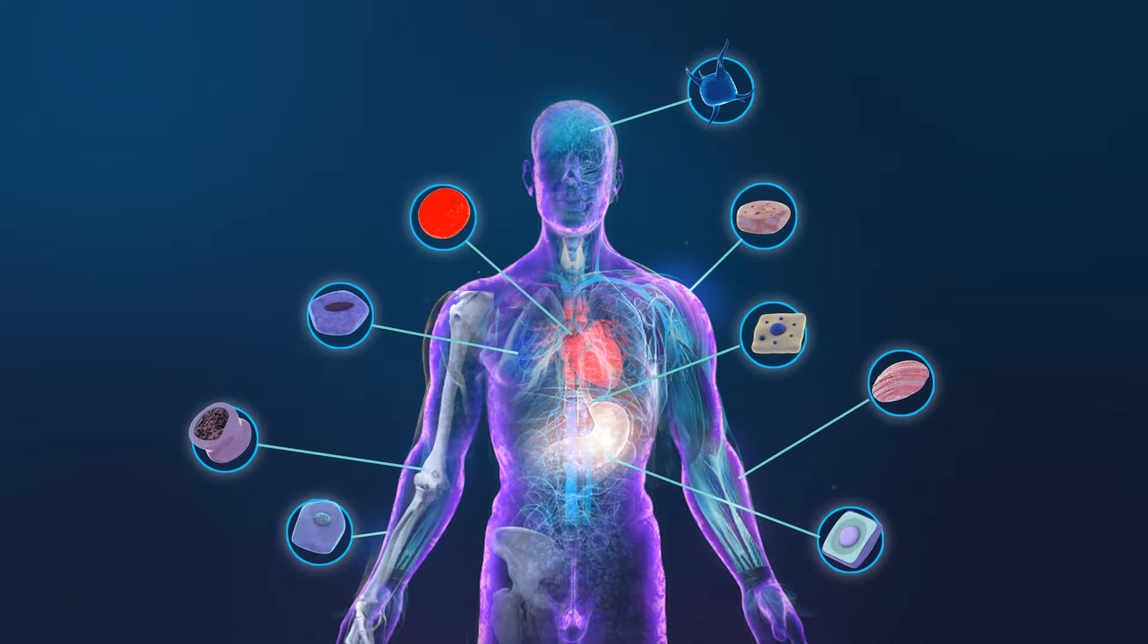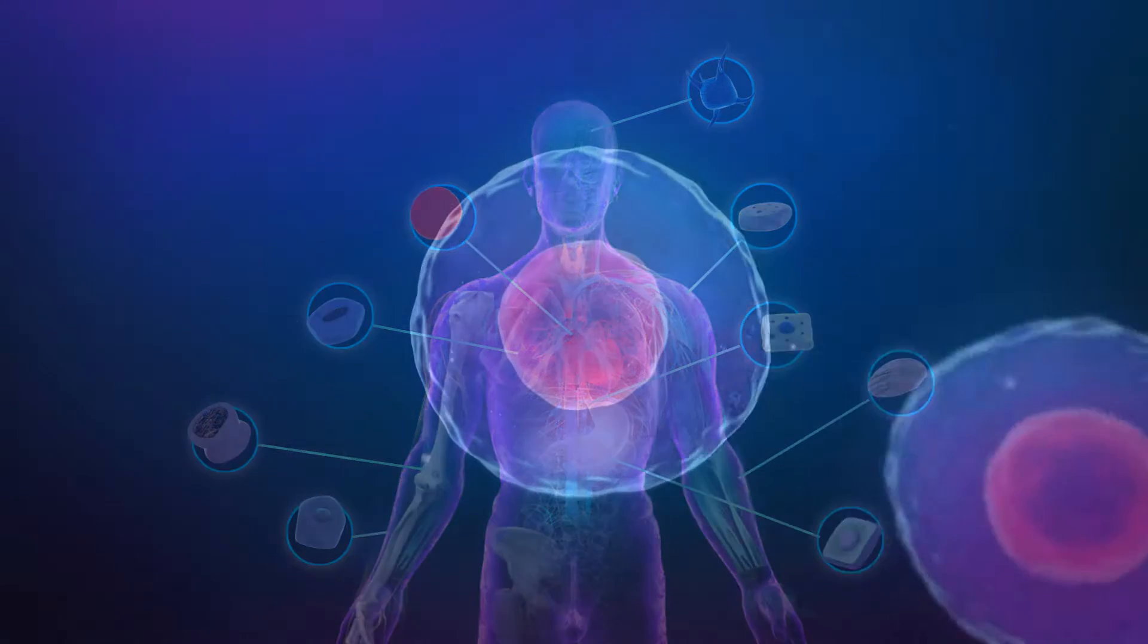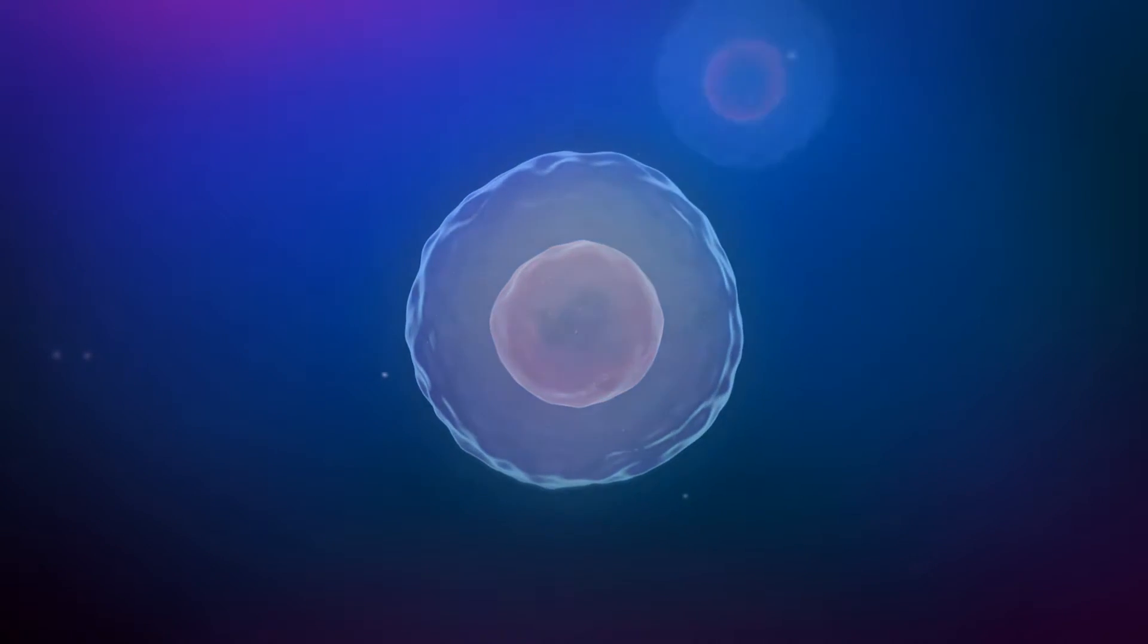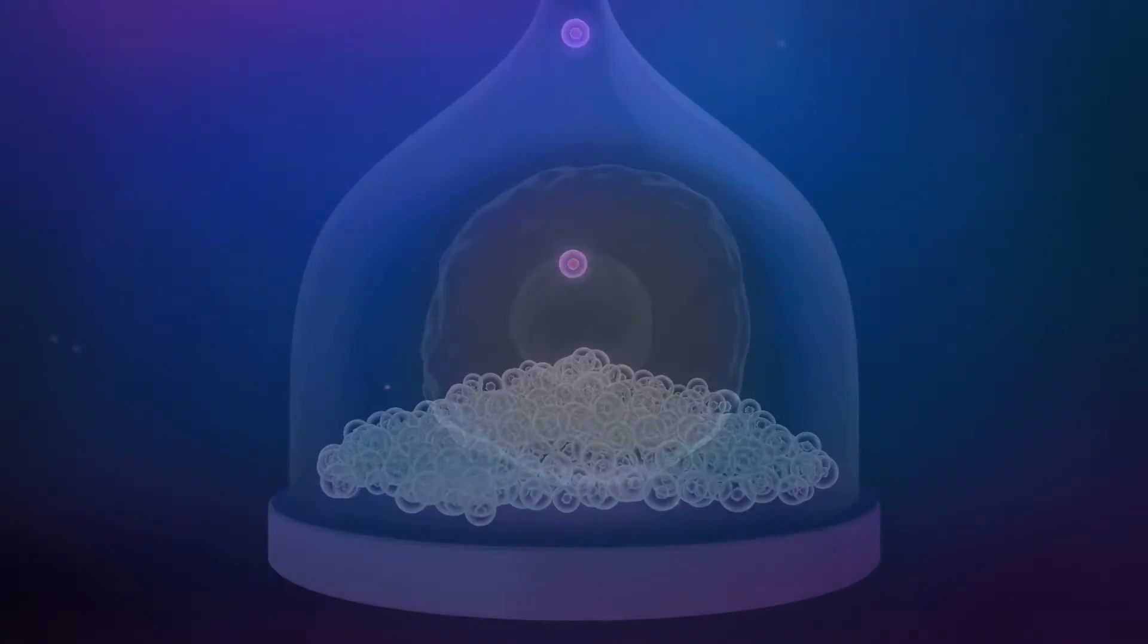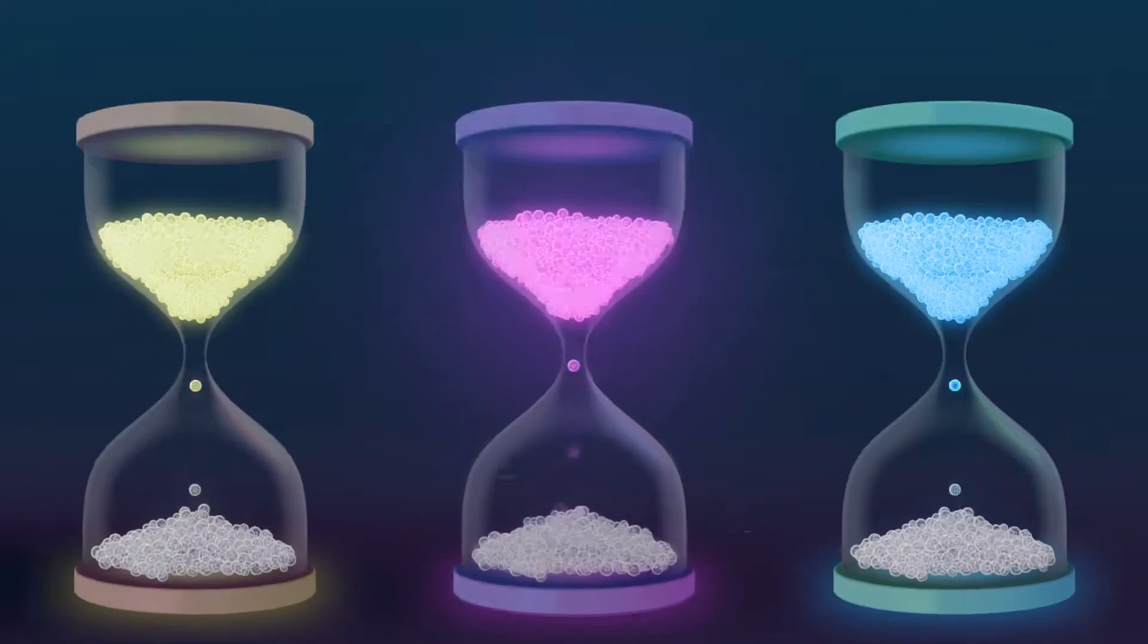In every tissue, many cells die when they reach their normal lifespan or after injury. In some tissues, the lifespan of cells is very long. Cells in the heart, skeletal muscle, brain, and the lens in your eye all live very long.